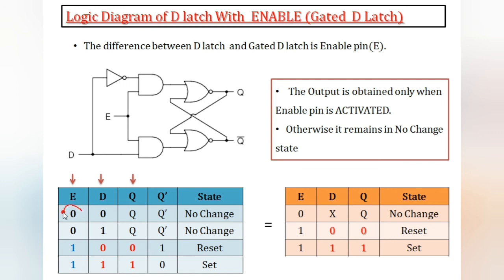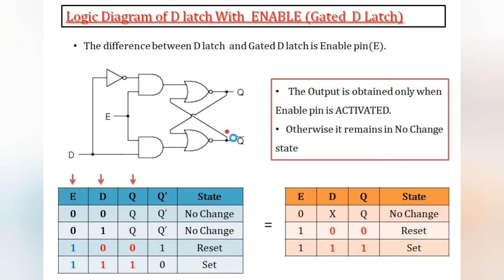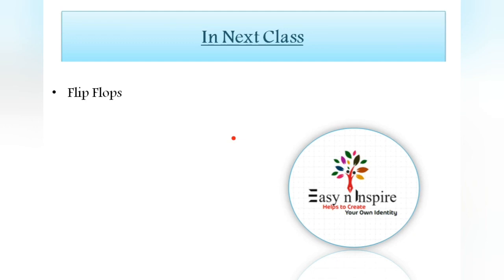If enable is 0, whatever the data input — 0 or 1 — it remains no change. If enable is 1 and data is 0, output is 0 (reset); if data is 1, output is 1 (set). This covers the logic diagram of D latch with enable, the truth table, and the simplified truth table. In the next class, I will explain what is a flip-flop and properties of flip-flop.